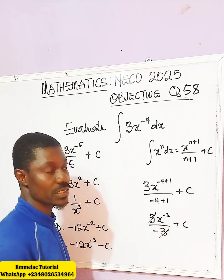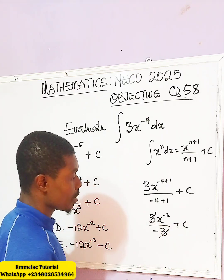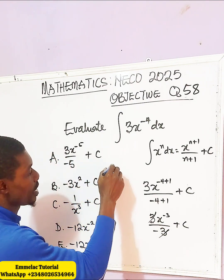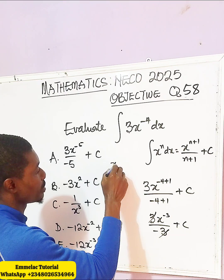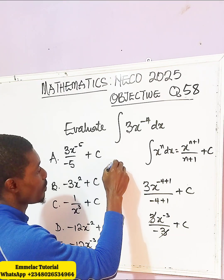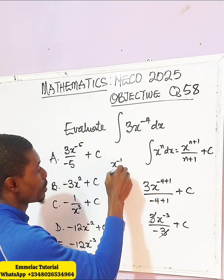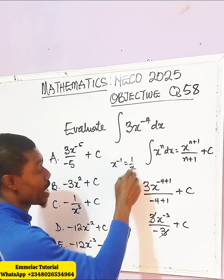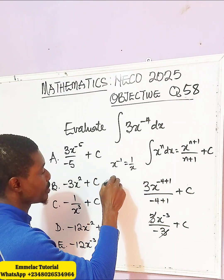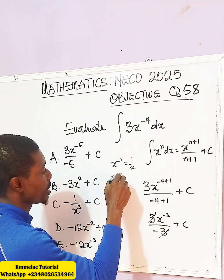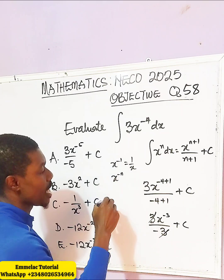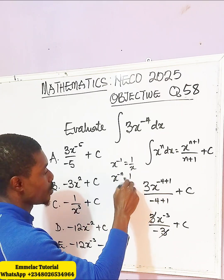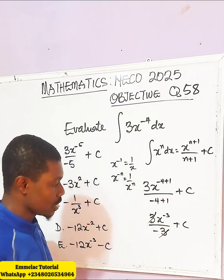Now this eliminates this. Take note: according to the law of indices, when you have x raised to the power of minus 1, it is simply 1 over x. And when you have x raised to the power of negative n, you have 1 over x raised to the power of n.